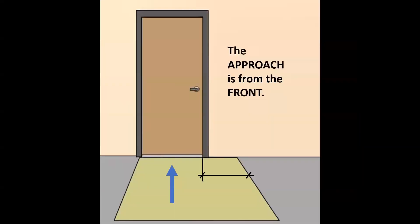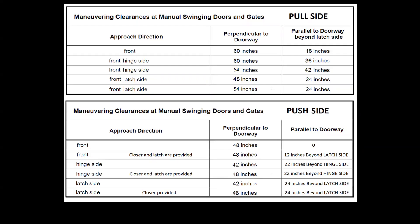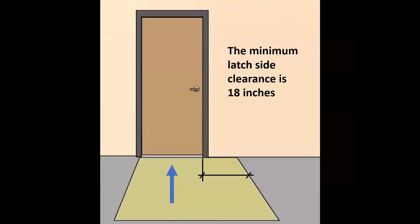Back to our scenario. In this scenario, we have an approach from the front to a pull door. We look at the pull door section of the table and find the approach direction from the front. The dimension perpendicular to the doorway is 60 inches, and the dimension parallel to the doorway beyond the latch side is 18 inches. So the minimum latch side clearance is 18 inches.